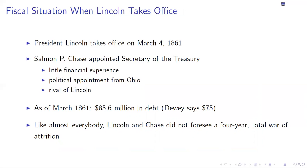Lincoln gets elected president in November of 1860. He is opposed to the expansion of slavery into the new territories and new states. In response, Southern states start to secede from the Union. By the time he takes office on March 4th of 1861, seven states have already seceded and war appears imminent.